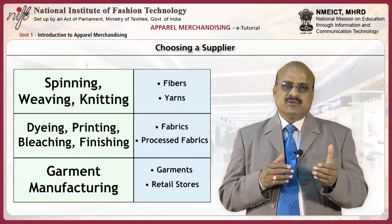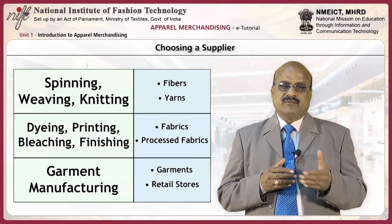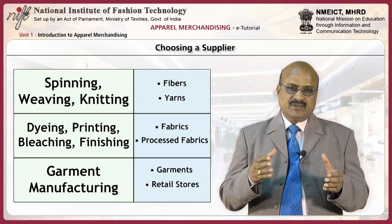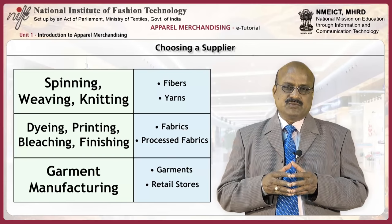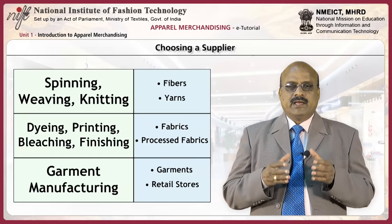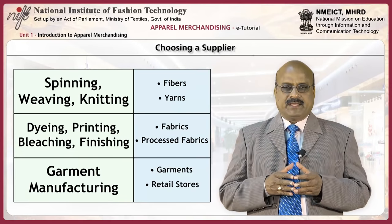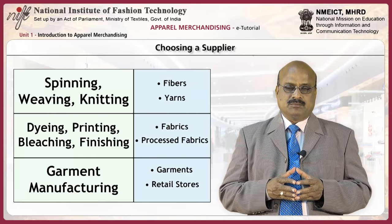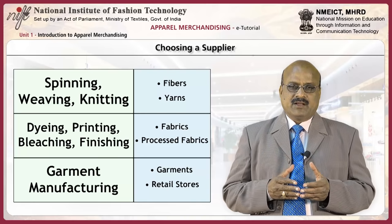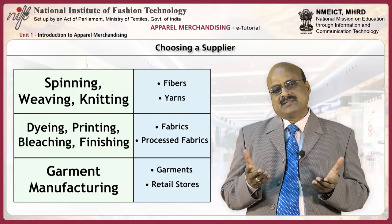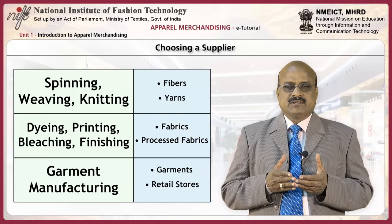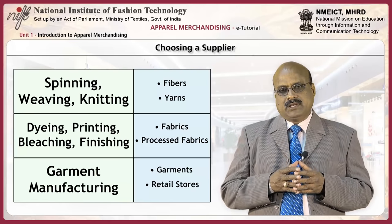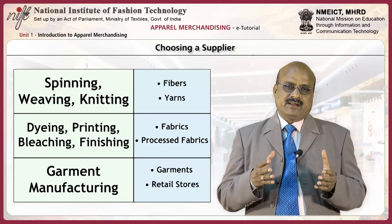Let us now look at the supply chain of apparel business. The supply chain involves various processes like spinning, weaving, knitting, dyeing, printing, garment manufacturing, and then bringing the merchandise to retail stores. Each process has its own lead time, ranging from a minimum to a maximum. There are challenges regarding the behaviour of apparel customers — how much, at what price, and when do they buy? These are the challenges that need to be addressed.